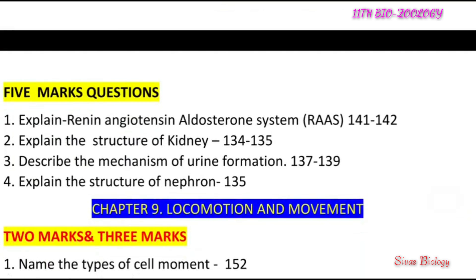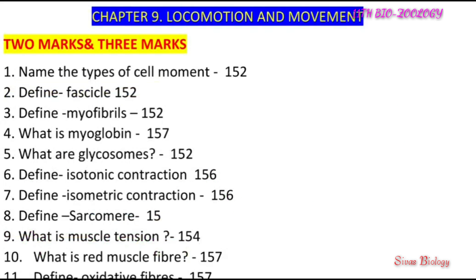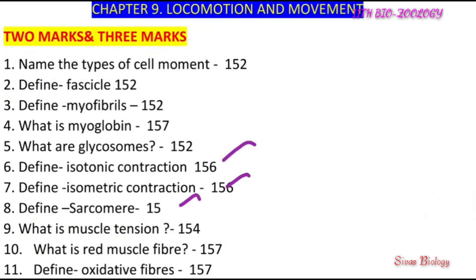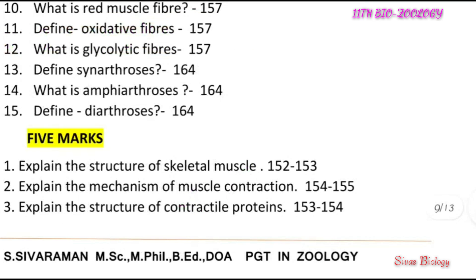Chapter 8 important detail: renin-angiotensin system, mechanism of urine formation in nephron — most important. Chapter 9: isotonic contraction, isometric contraction, types of cell movement, detail mechanism of muscle contraction, structure of contractile proteins, structure of skeletal muscle.